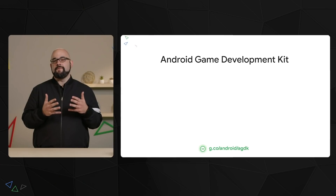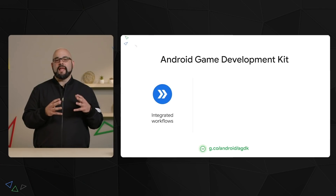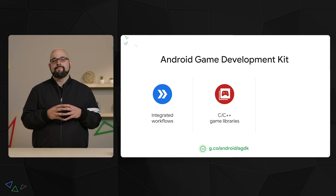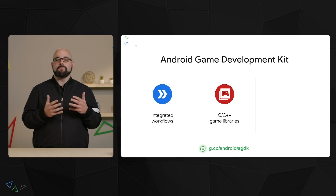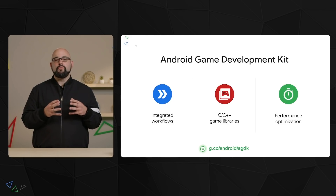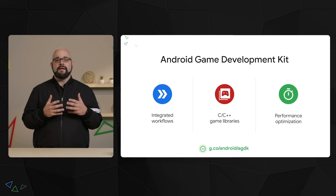Last year, we released the Android Game Development Kit, a set of tools and libraries to help make Android game development more efficient. The kit has three key focuses. First, integrated workflows led by the Android Game Development extension for Visual Studio. Then there are essential C and C++ game libraries, like the Game Activity and Game Input libraries, which help you build more stable native C and C++ games with less Java. And lastly, performance optimization, where tools like the Android GPU Inspector and the Android Performance Tuner can help you track, profile, and optimize game performance before and after a launch.